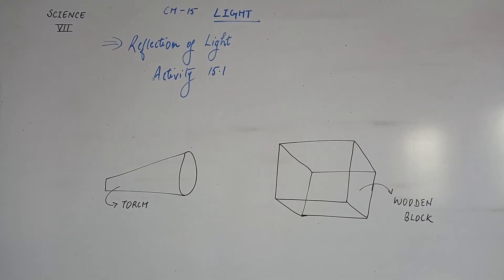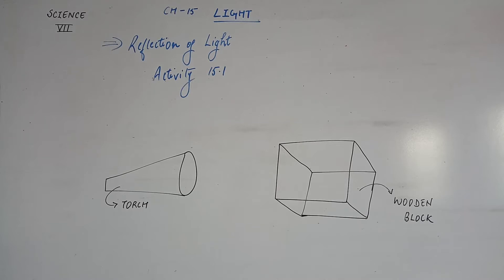Chapter 15, Light. This is the second video of this chapter. In the previous video, we were discussing about the reflection of light. We said that the change of direction by a mirror is called reflection of light. Now let us prove this with the help of an activity — Activity 15.1.